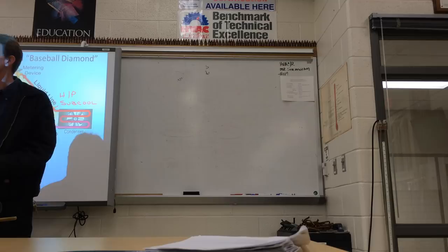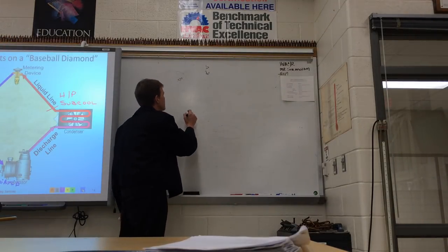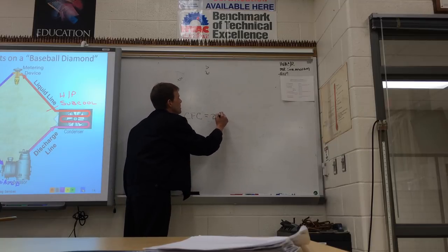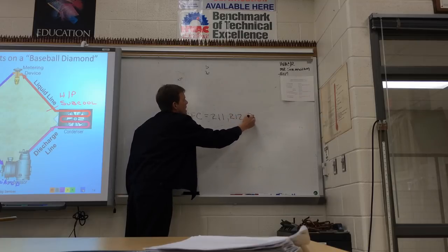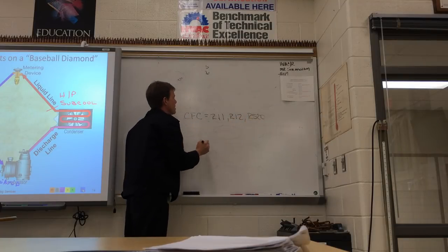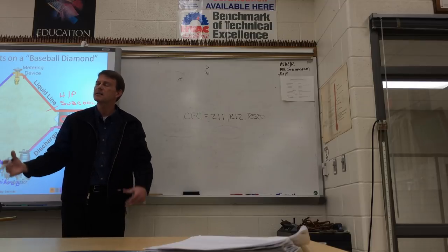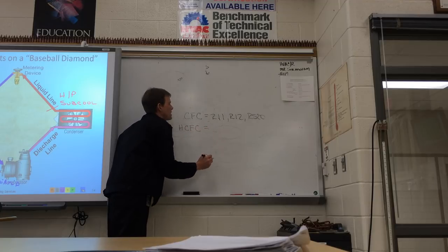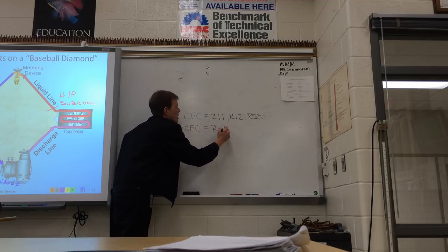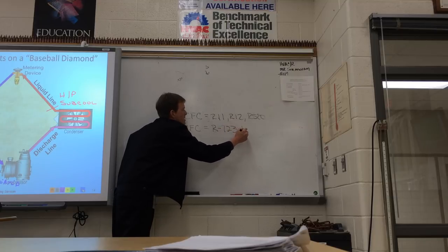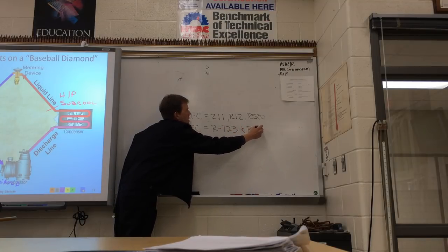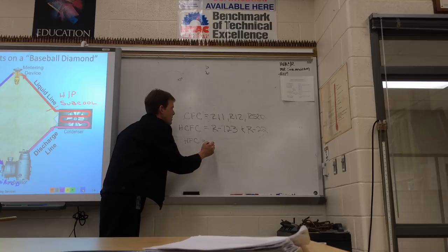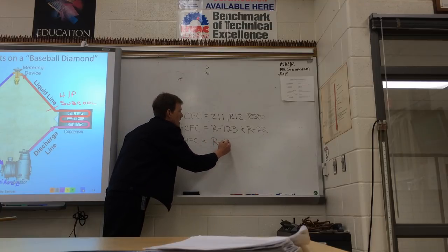So which one has the worst ozone depletion potential? CFC. CFC has the worst. Give me some examples of CFCs. R11, R12, R500. What's the next one that's not as bad but still has some damage to the ozone? HCFCs. And give me an example of two HCFCs. R123 and R22. And then ultimately the ones that we're using, HFCs and what's one of those? R134A.